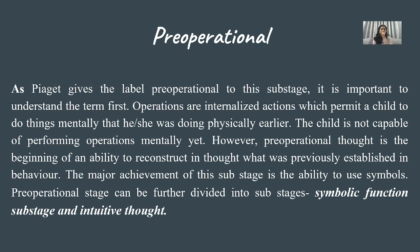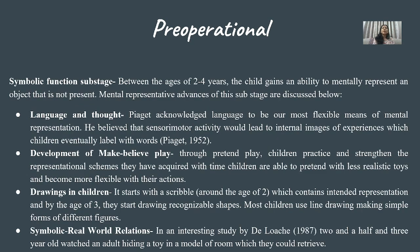The pre-operational stage can be further subdivided into two sub-stages: symbolic function (ages 2–4) and intuitive thought (ages 4–7). Between the ages of 2–4 years, the child gains the ability to mentally represent an object that is not present. Key advances include language development and make-believe play.